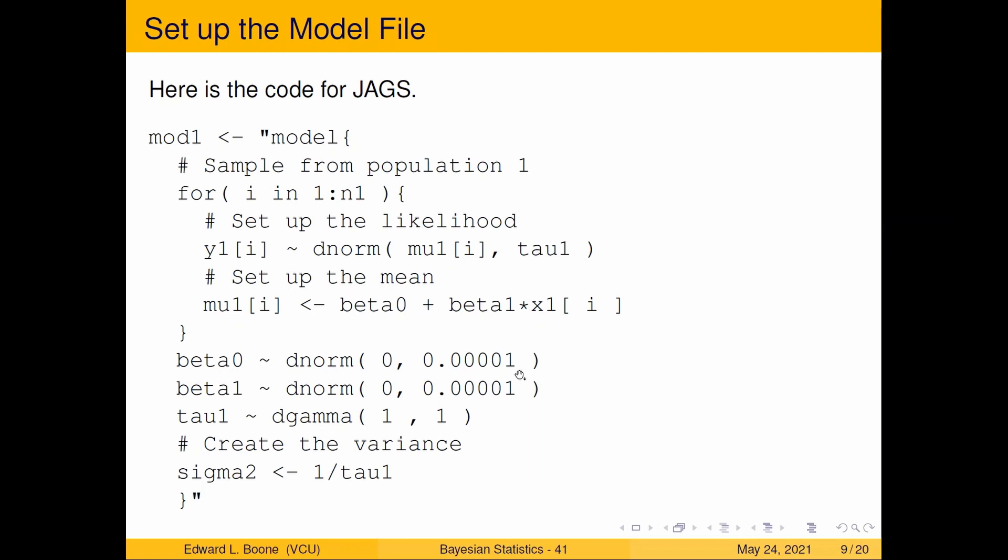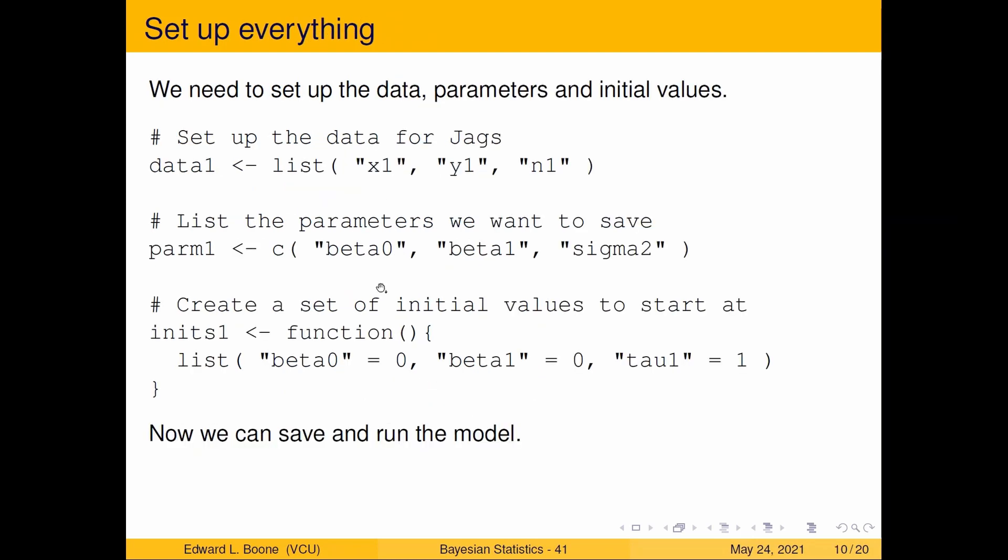Now we have our prior distributions. We have beta zero d norm 0.0001 which is our one hundred squared, and beta one was zero d norm zero 100 squared. Remember these are in precisions. Sigma squared is going to be one over tau and tau we're going to do is gamma one one and we'll see what this produces for us.